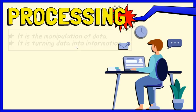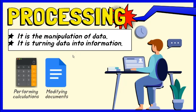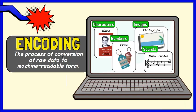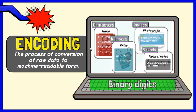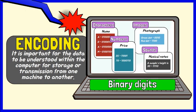Processing data into information is the fundamental purpose of a computer. Computers manipulate data in so many ways, like performing calculations, modifying documents and pictures, and sorting lists of words or numbers. Processing includes the conversion of raw data to machine-readable form, which is called encoding. Specifically, this is putting a sequence of characters, numbers, and other data types into a specialized format for efficient transmission or storage. Encoding is important for the data to be understood within the computer, for storage or transmission from one machine to another.